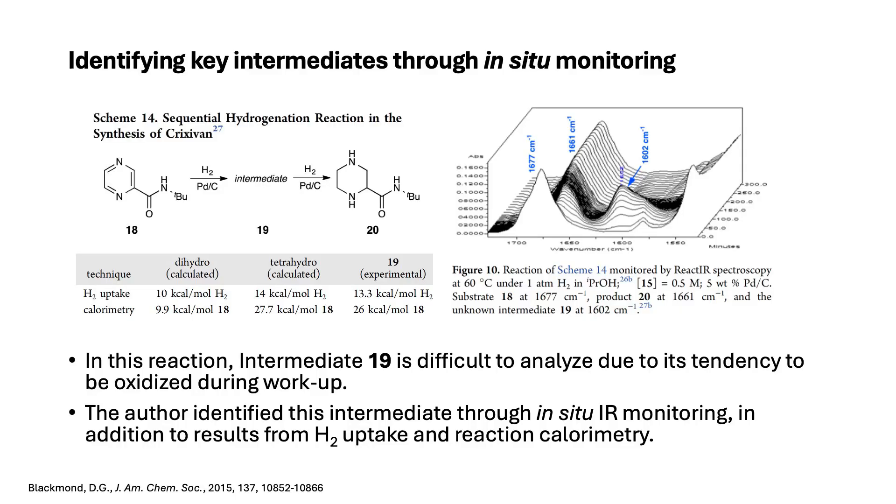For instance, in this hydrogenation reaction, the author was able to identify intermediate 19 through React-IR gas uptake and also reaction calorimetry. Intermediate 19 was observed to be oxidized easily during workup, so the use of in-situ tools bypassed this difficult situation, and they were able to identify 19 as the tetrahydro intermediate. Overall, the use of in-situ kinetic profiles combined with our chemical intuitions can aid in elucidating reaction mechanisms, and it can also help suggest further experiments to test our hypothesis.